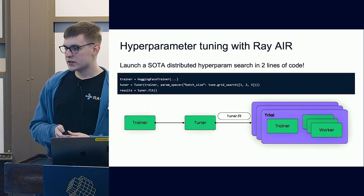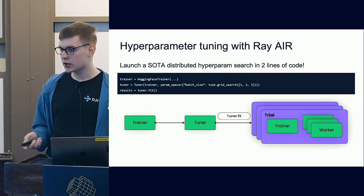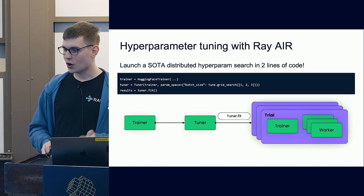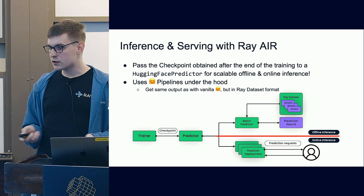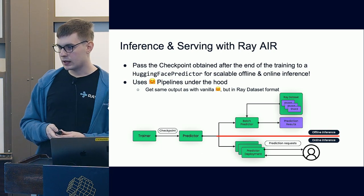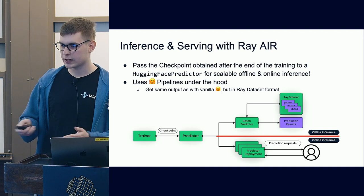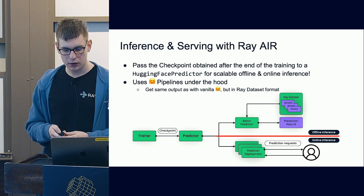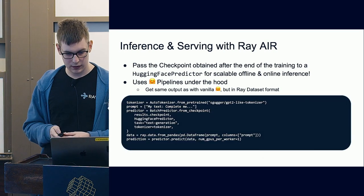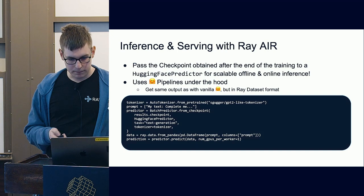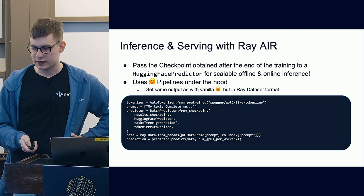For other integrations with the rest of Ray AIR: we can do hyperparameter tuning with Ray AIR — all we have to do is pass our HuggingFace Trainer into a Tuner object, and that's going to run a distributed hyperparameter tuning run of our distributed training, automatically taking care of nested parallelism and resource allocation. For inference and serving, we have Ray Serve for online inference, and also the Predictor API for offline batch inference. We can use the checkpoint obtained after training to instantiate both Ray Serve and the batch predictor. Because we are using Hugging Face pipelines under the hood, we get the same consistent output as from non-distributed Hugging Face Transformers. An example of batch prediction uses the batch predictor API — pass the checkpoint, set the HuggingFace predictor, pass a Ray Dataset, and do prediction.